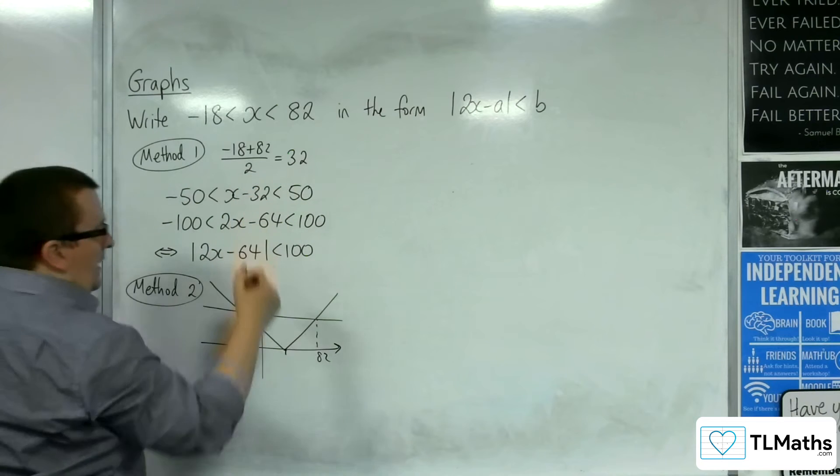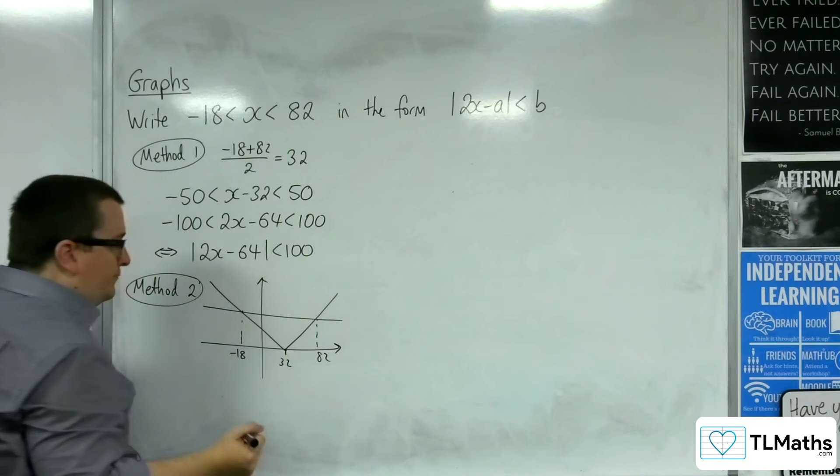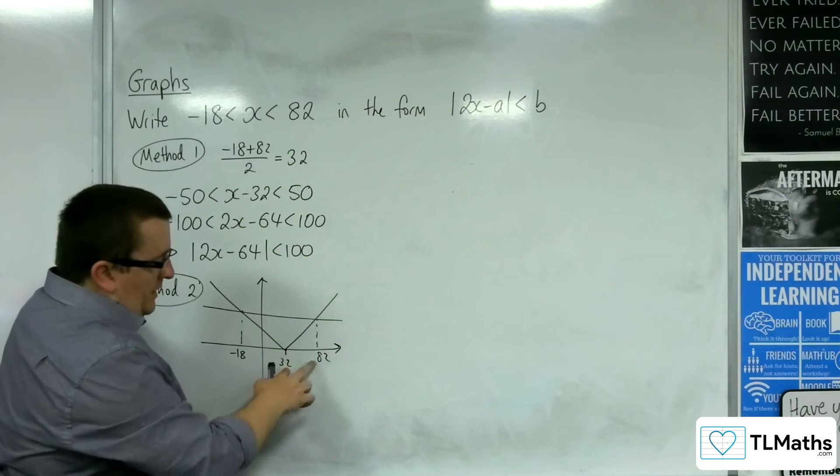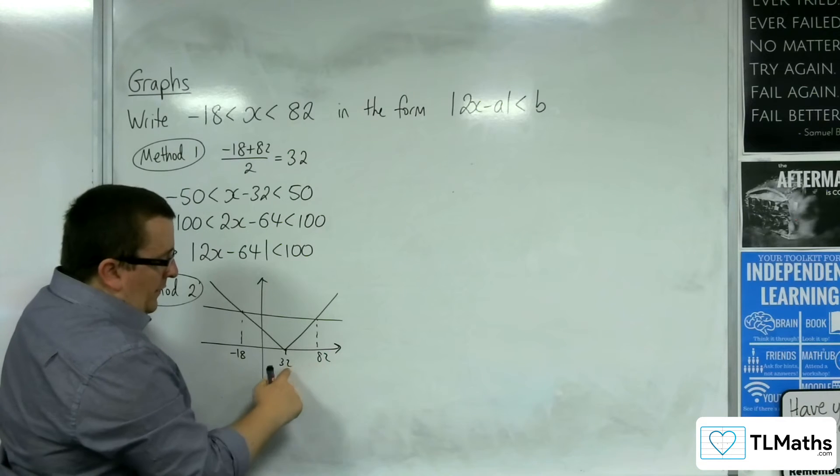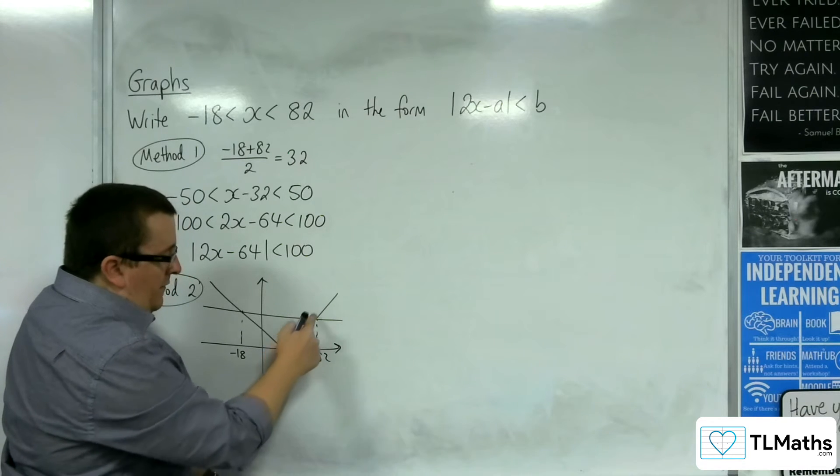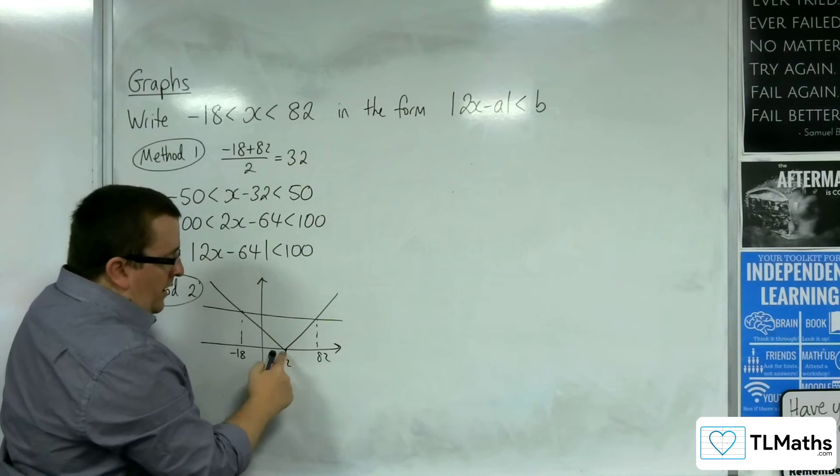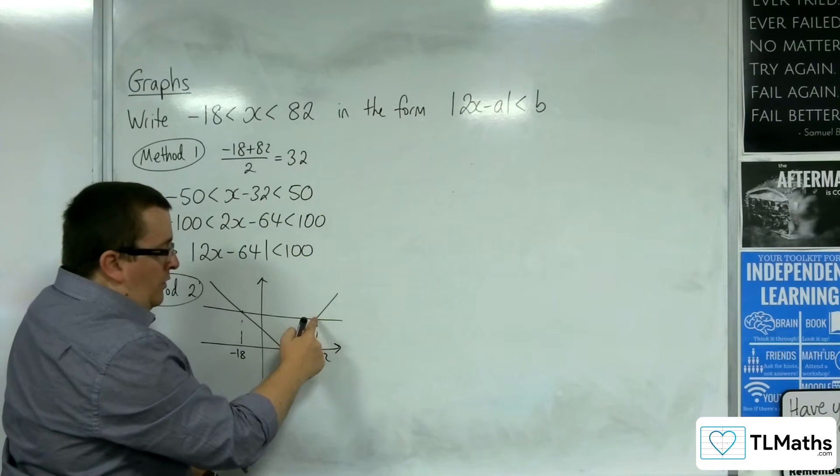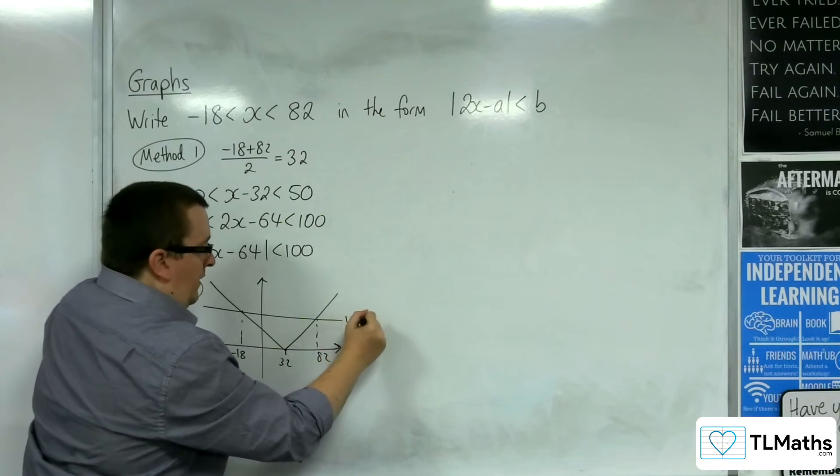This point is the midpoint between the -18 and the 82 because the graph is symmetric. So like we did up here, that's going to be 32. So to get from 32 to 82, that's a distance of 50. If the line has gradient 2, going along 50, I've got to go up 100. And so that's got to be y = 100.